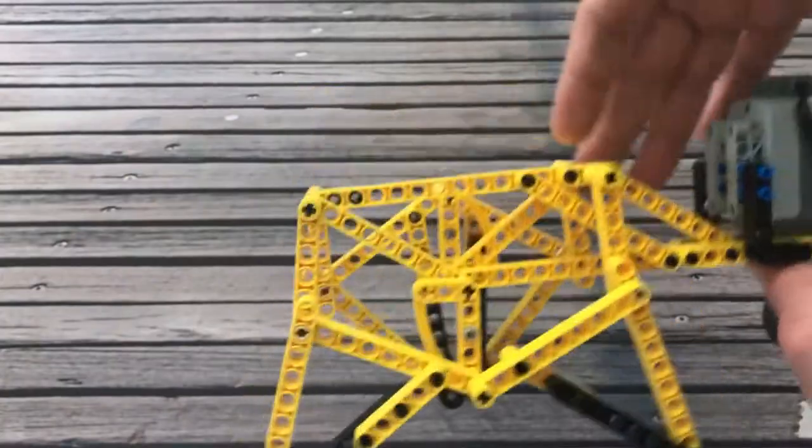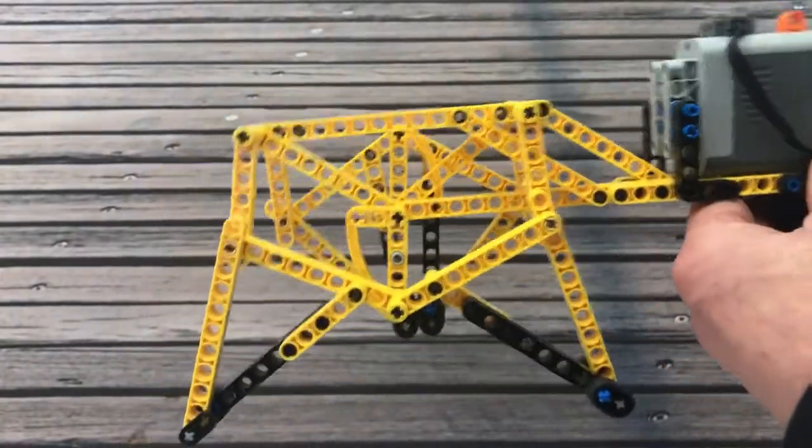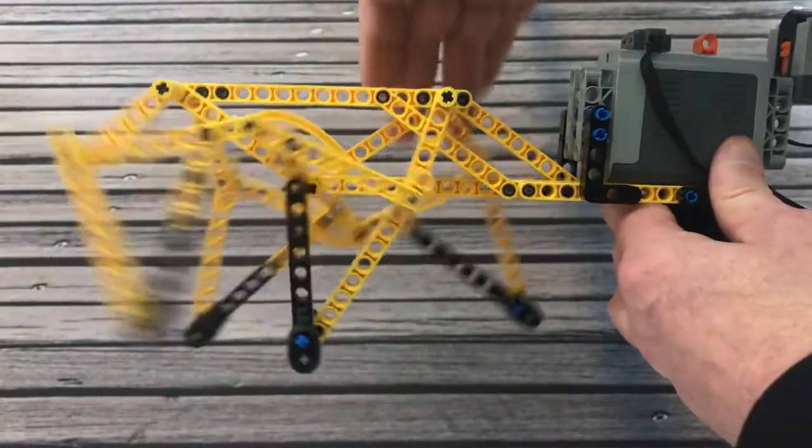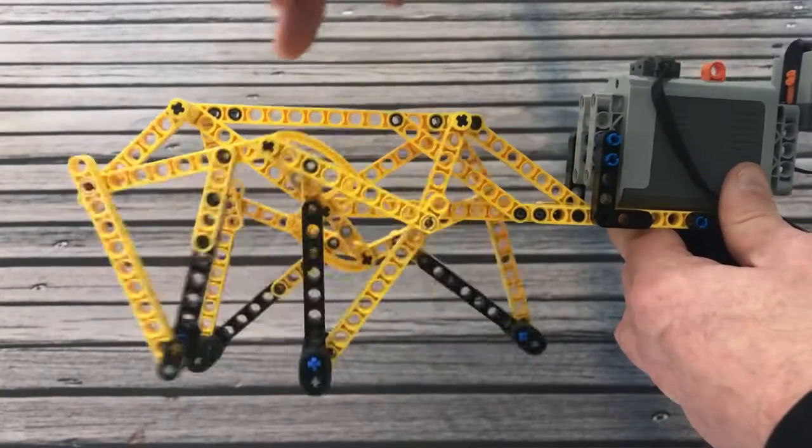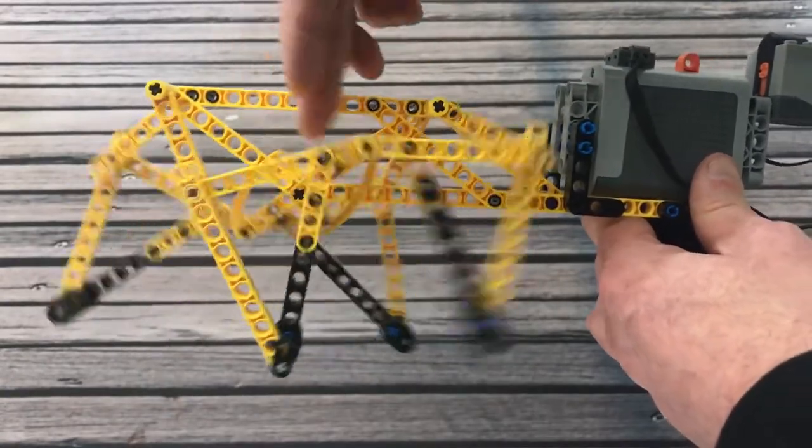And especially with a passive walker like this that's driven by wheels, these legs have to move effortlessly. You can see the little friction they have.